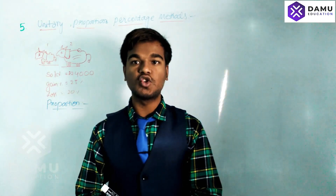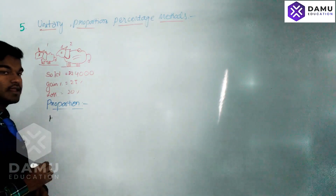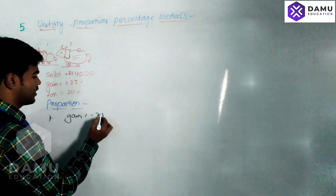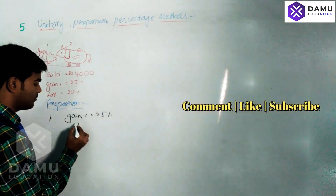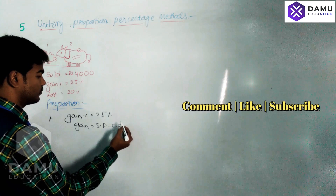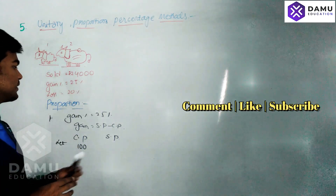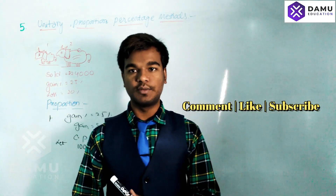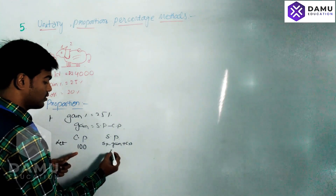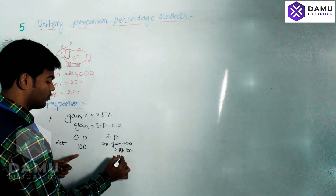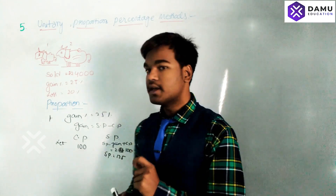We have to find the total cost price for two blocks, and whether the farmer gets a total profit or total loss percentage by selling two blocks. For the first block, gain percentage is 25%. Gain is the value increased over cost price, so gain equals SP minus CP. If we take cost price as 100, then SP equals gain plus CP, which is 25 plus 100 equals 125 rupees.